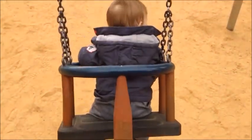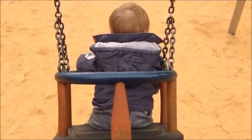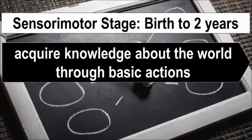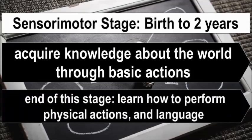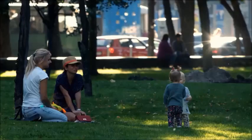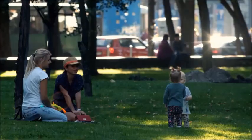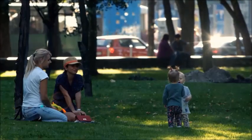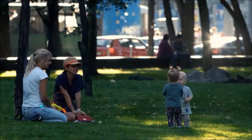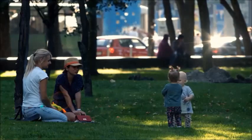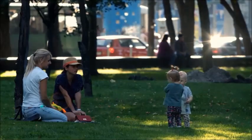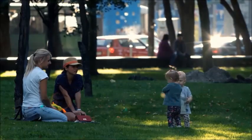As they interact with their environment, they continually develop an understanding of how the world works. At the end of this stage, they learn how to perform physical actions, and language starts to appear, which they learn from the people with whom they interact. The main achievement or breakthrough at this period is object permanence — the knowledge that objects exist even if they cannot be seen.